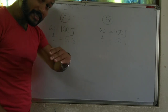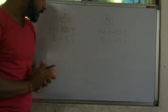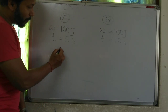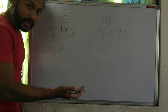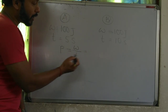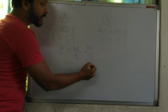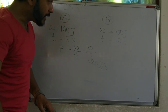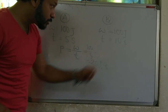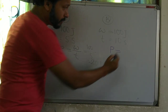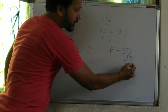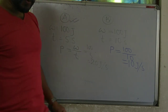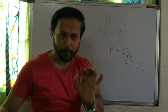Power means work divided by time. Power of person A equals 100 divided by 5, that is 20 Joule per second. Power of person B equals 100 divided by 10, that is 10 Joule per second. So person A has got more power. I hope you have got a rough idea about power.